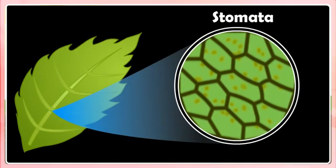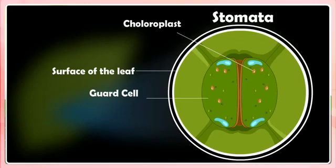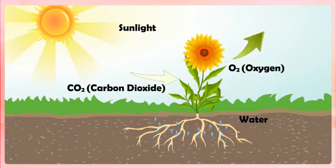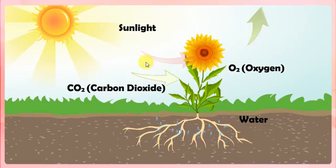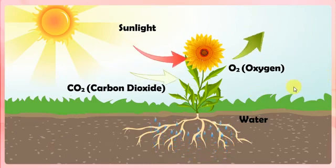Photosynthesis. Each pore is surrounded by a pair of guard cells. The opening and closing of stomatal pores in the leaves is controlled by the guard cells. Carbon dioxide gas present in air enters the leaves of a plant through the stomatal pores on their surface. Plants take water needed for photosynthesis from the soil. Water present in the soil is absorbed by the roots of a plant and then transported to the leaves through vessels which run like interconnected pipes throughout the roots, stem, branches and leaves.